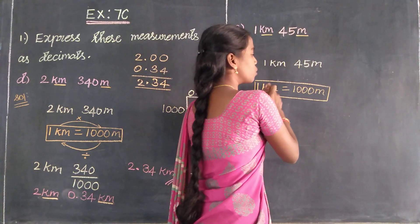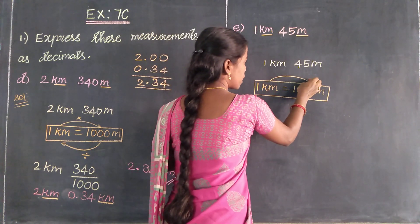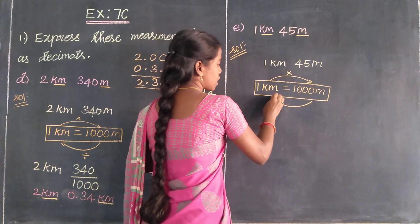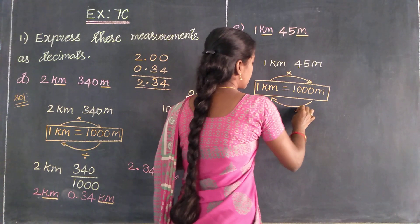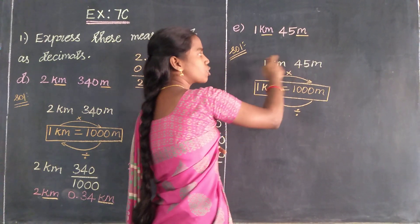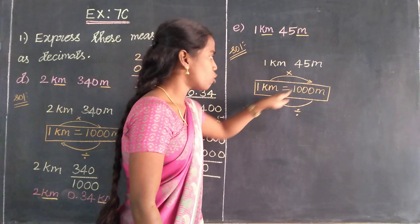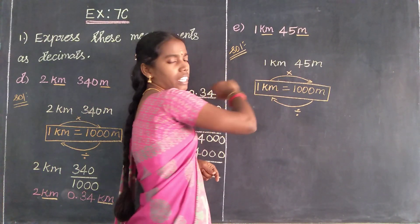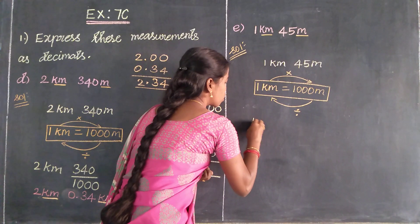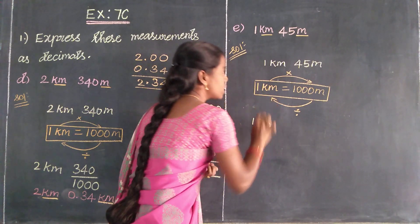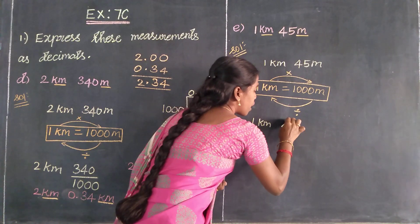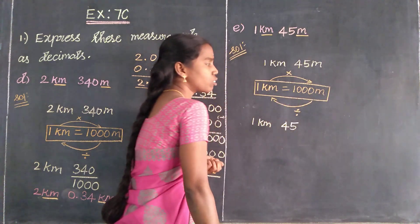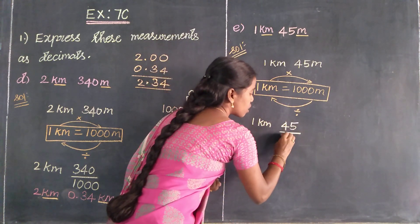See, in this number kilometers said to change into meters — multiply. See, meter to kilometers — divide. So first change meter to kilometer. The first number, 1 kilometer, has no changes. Only the meter changes: that is 45 divided by 1000, because 1 kilometer equals 1000 meters. So 45 divided by 1000.